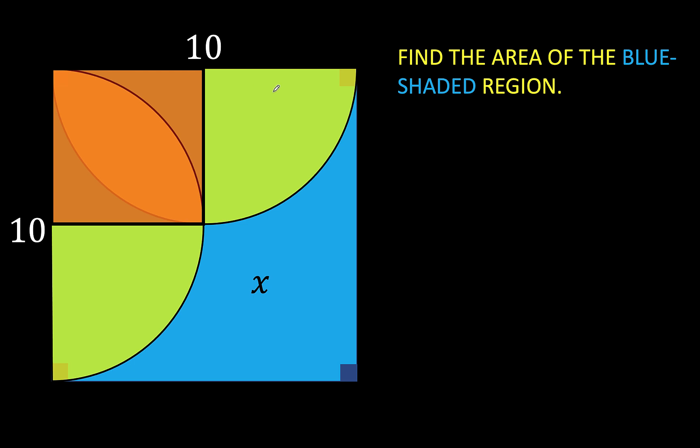one-half the diameter of the semicircle, which is 5 units each, and therefore its area is 5 times 5 or 25 square units. Then we have here two quarter circles. The area of each of these two quarter circles is